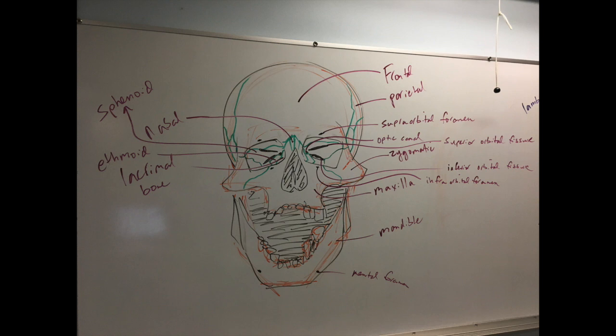Two more little holes — one right here on either side of the chin. What do you think those are called? You said the region already. Mental foramen. So that's easy.